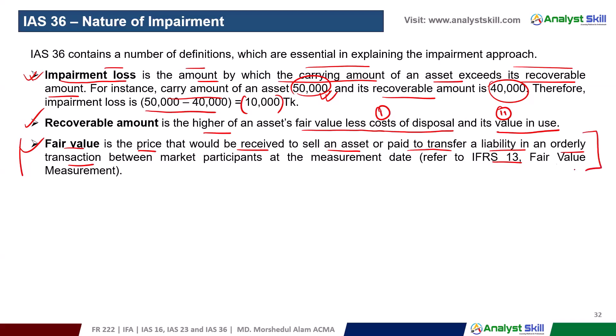Under IFRS 13, there are three levels of fair value measurement — Level 1 to Level 3. Fair value is the price that would be received to sell an asset or paid to transfer a liability.